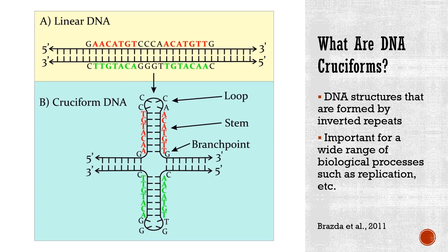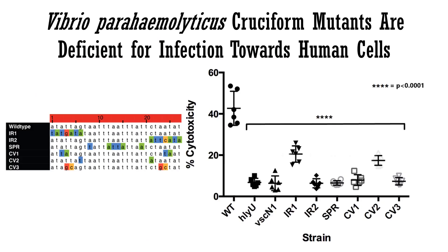We suspect that bacterial proteins play a part in disassembling the cruciform. We took this segment of DNA and produced several mutants to see what happens to the virulence of the bacteria once we alter the DNA sequence of the cruciform. We then performed a cell death assay by infecting human cells with these mutants. The sequences circled in red on the table are the inverted repeats that would come together to form a cruciform. The mutants were designed to change the bases that are thought to be involved in cruciform formation.